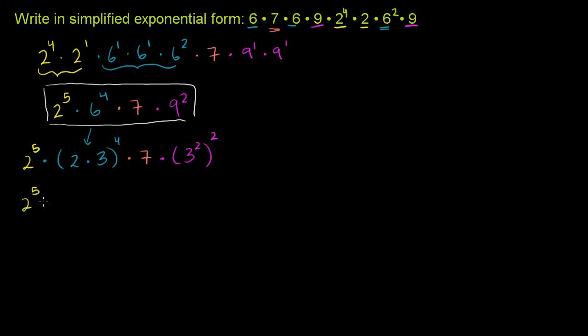So we have the 2 to the 5th times, now what's 2 times 3 to the 4th? Well, here's an exponent property. If you take the product of two things and it's to the 4th power, that's the same thing as 2 to the 4th times 3 to the 4th. And then you have this 7 here times 7. So I essentially just raised both of these guys to the 4th because their product is being raised to the 4th power.